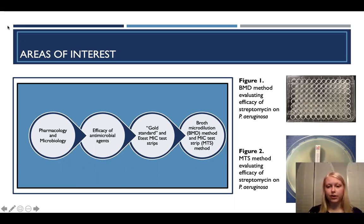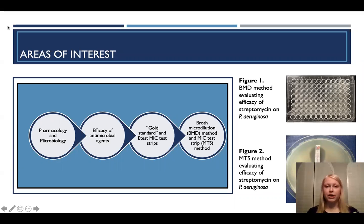You can see that here in figure one. The BMD method uses 96-well plates read in a micro plate reader, and each of these 96 wells has a varying concentration of antimicrobial agent mixed with a microorganism. Once the optical density is read in this micro plate reader, we can indirectly determine the amount of growth of microorganism in each well, and then determine how much inhibition is being shown at different concentrations of antimicrobial agent.